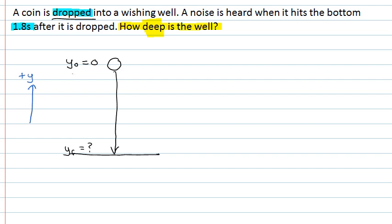Other things we can fill in. If we say that it's released at t equals zero, then the coin will hit the bottom at t equals 1.8 seconds. We also know that because the coin was dropped, that its initial velocity at the top, the second it's released, will be zero as well.